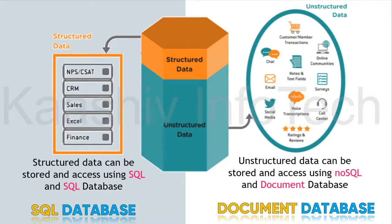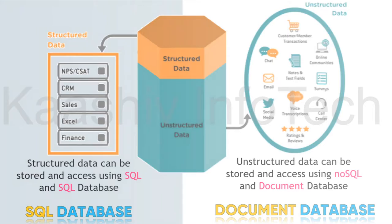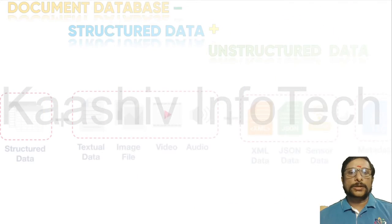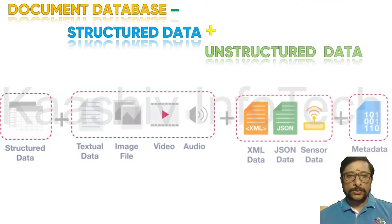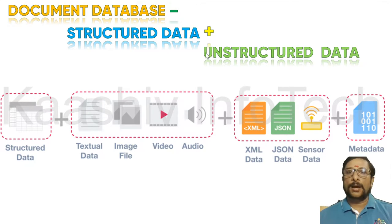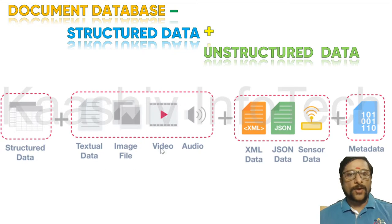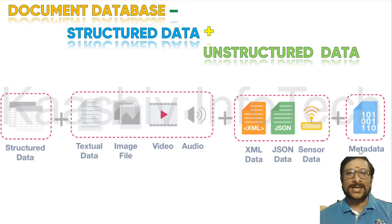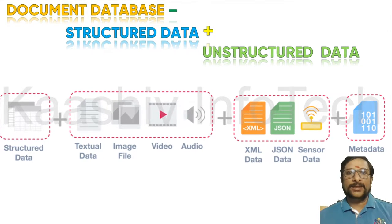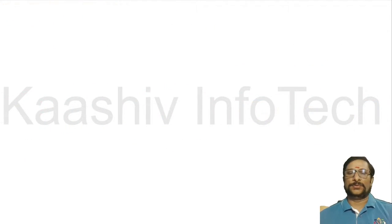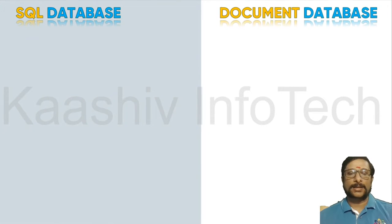The data is stored as documents. As I told you, a document database is a combination of structured data and unstructured data. So textual information, image files, video, audio, XML, JSON, sensor data, and metadata — any kind of data, this will process it for you. That is the wonder of document database.